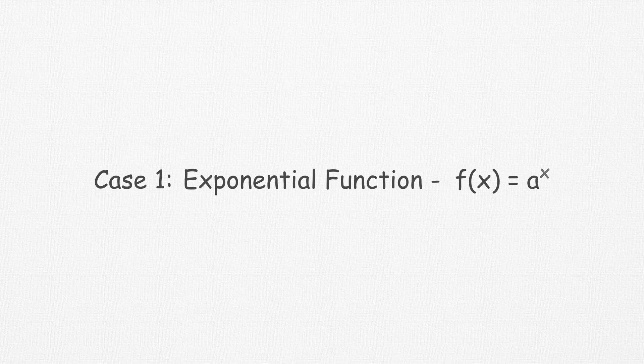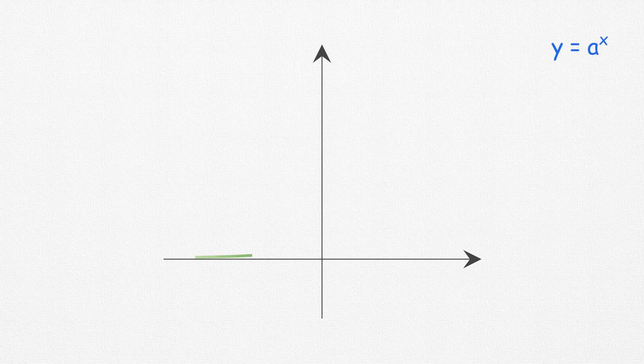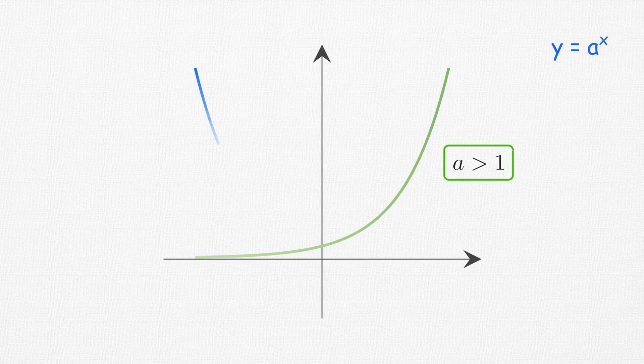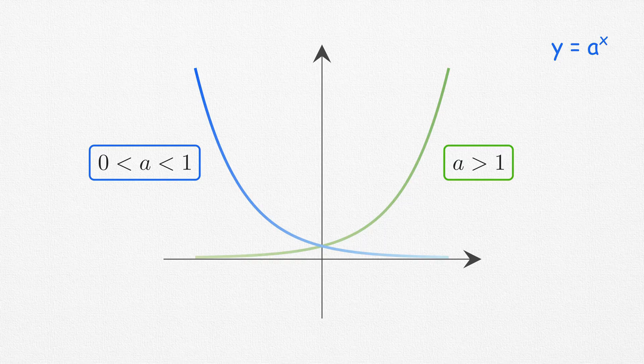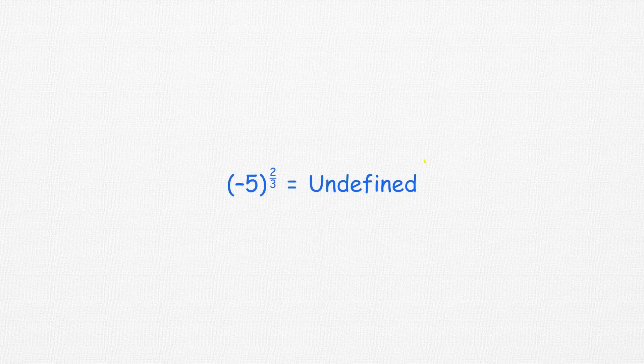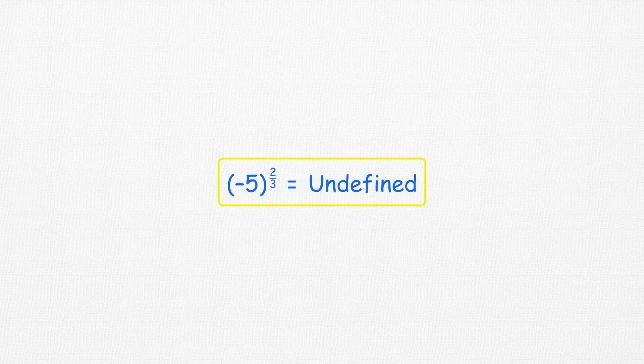If you take out your calculator and try to evaluate minus 5 to the power 2 by 3, that is 0.66, you will get a verdict of undefined or not a number. It's because under the hood the calculator uses a function a raised to the power x to evaluate any power operation. Now this function is defined for a greater than 1 and a less than 1 but greater than 0, but not defined for a as a negative number. That's why in this particular case the function is undefined.